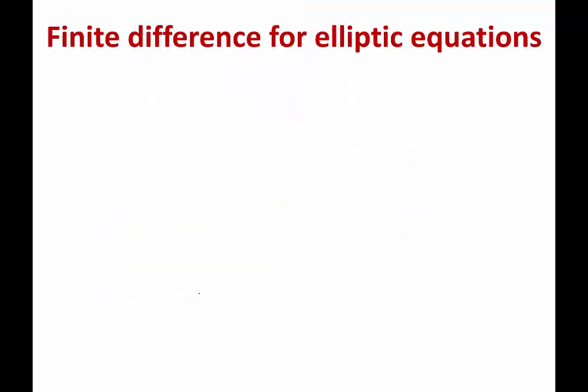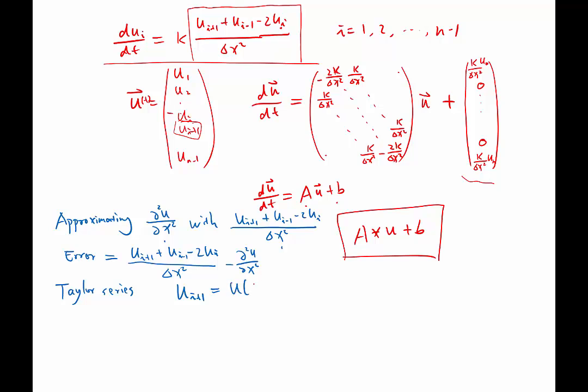For example, u_{i+1}, which is defined as the solution u at i times delta x, because each grid spacing is delta x, the i-th grid point is at x equal to i times delta x. Not i, but i+1 delta x, so i delta x plus another delta x. It can be expanded using Taylor series assuming the function is smooth and analytic. It is equal to k goes from 0 to infinity of u at i delta x of the k-th derivative times delta x to the k-th power and times 1 over k factorial.